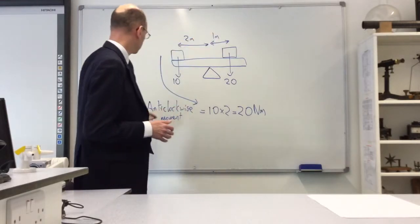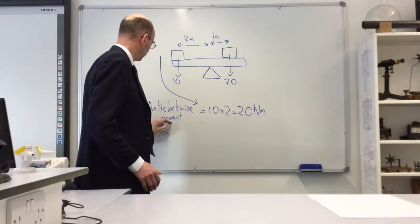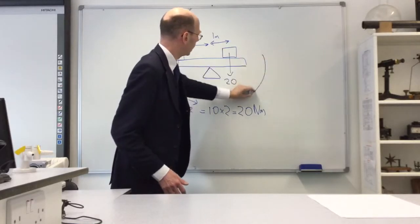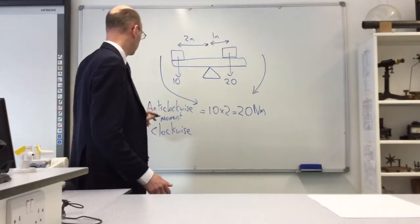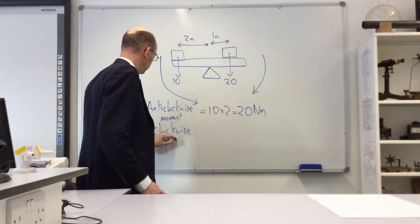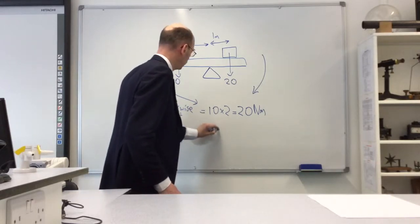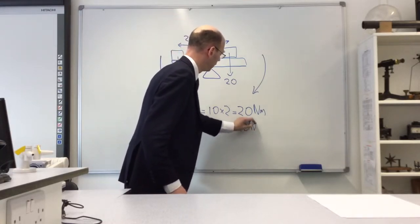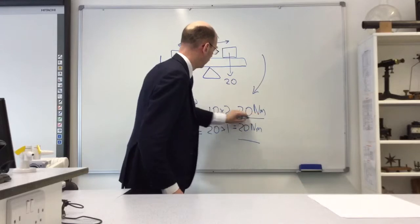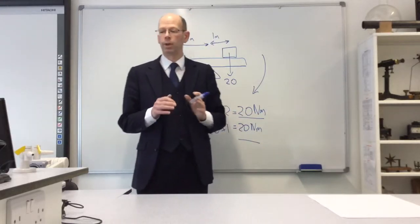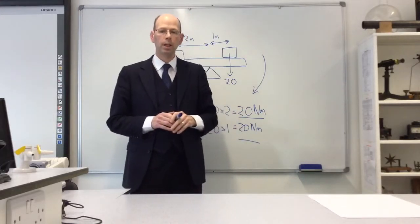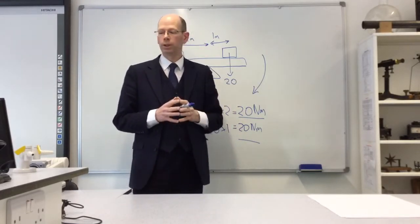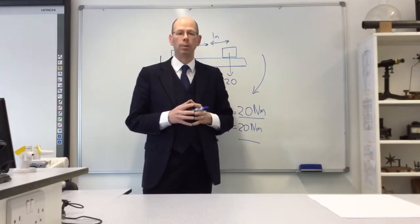If I now multiply the forces and distances on this side, the clockwise moment is 20 newtons times 1 meter, which equals 20 newton-meters. Lo and behold, I've got balanced moments—I've got equilibrium. To get a beam to balance, we need not just balanced forces but also balanced moments.